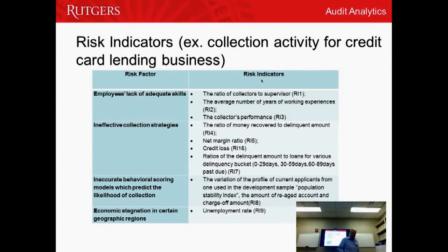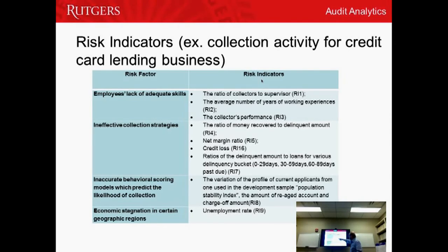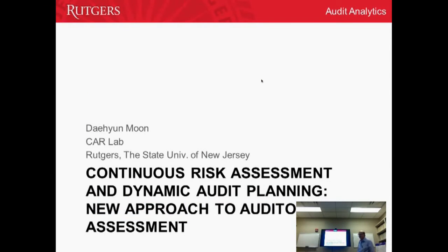Some examples: for the risk of employees lacking ethics, the KRI might be the ratio of collectors to supervisors, or the average number of years of working experience. For ineffective collection strategies, the KRI might be the ratio of money recovered to delinquent amount, net margin ratio, credit loss, or ratio of delinquent amounts. For inaccurate behavioral scoring models predicting likelihood of collection, KRIs include the variation of the profile of current applicants from the one used in development, and the sample population stability index. The continuous analytic monitoring module collects necessary data, computes KRIs, and measures the risk level based on the assessed level of KRIs.